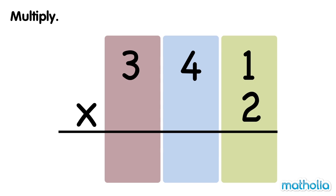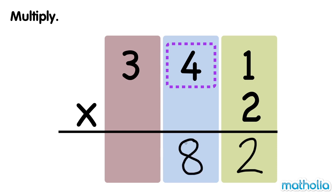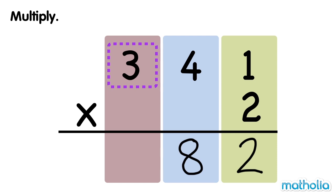Let's find 341 times 2. First, multiply the ones by 2. 1 one times 2 equals 2 ones. Next, multiply the tens by 2. 4 tens times 2 equals 8 tens. Finally, multiply the hundreds by 2. 3 hundreds times 2 equals 6 hundreds. 341 times 2 equals 682.